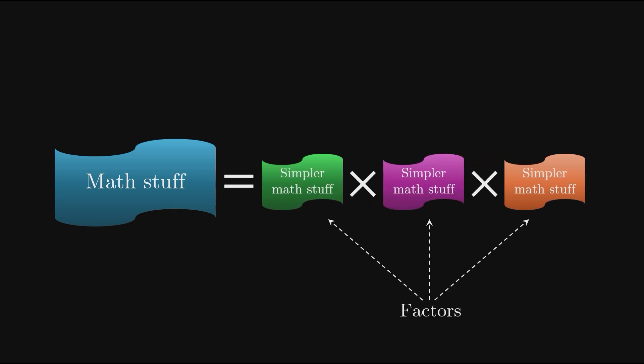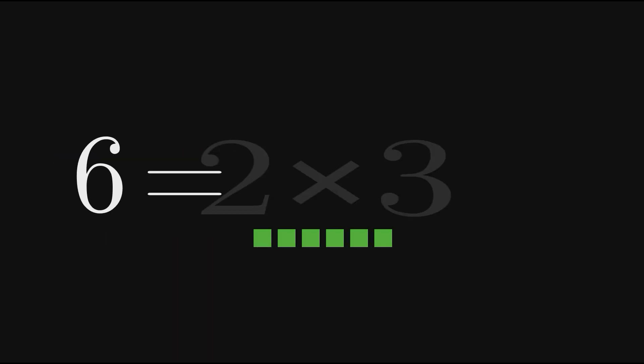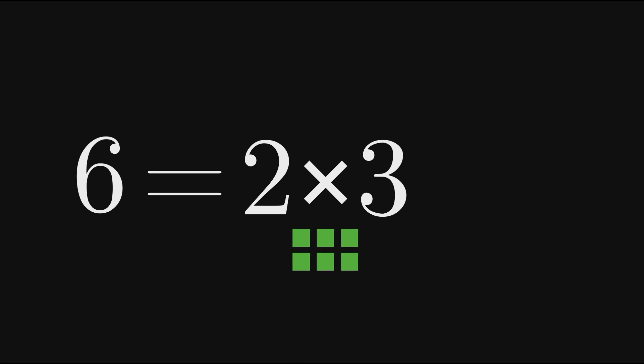This idea is easily shown using whole numbers. For example, we can factor the number 6 by writing it as 2 times 3. Here we say that 2 and 3 are both factors of 6.